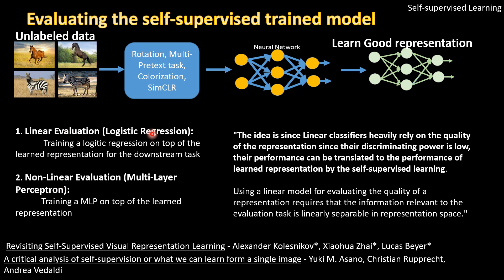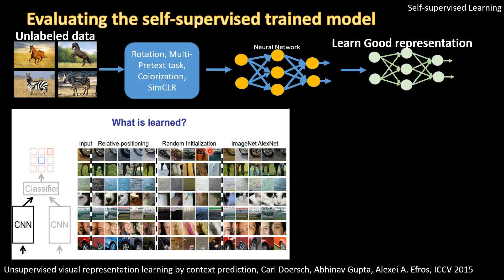Although people have tried both nonlinear and linear evaluation, logistic regression tends to be used most often. Because a linear classifier heavily relies on the quality of the representation — its discriminating power is low — its performance directly reflects the quality of the learned representation. If logistic regression performs well on the learned representation, it means the representation is good. So logistic regression is widely used to evaluate self-supervised learning models.